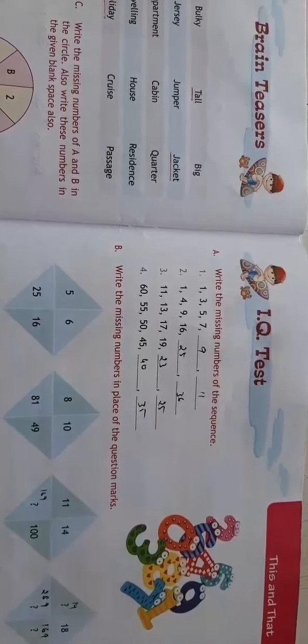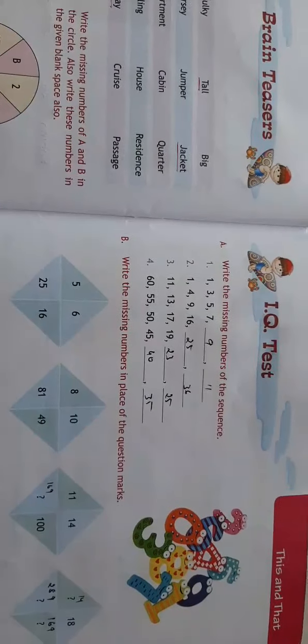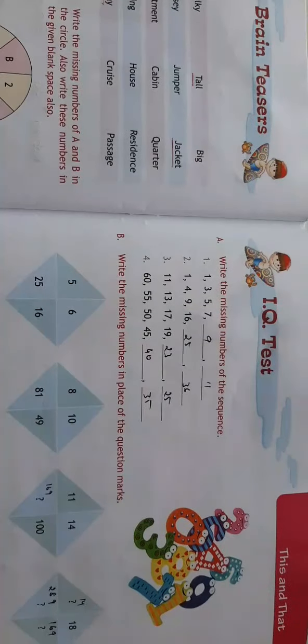Then 11, 13, 17, 19, 23, 25. Fifth one is multiples of 5 in reverse order. 60, 55, 50, 45, 40, 35.